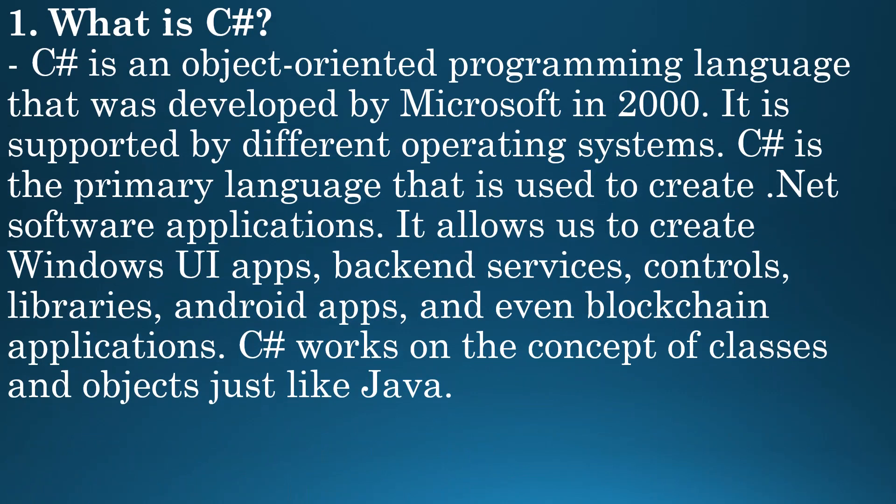What is C-Sharp? C-Sharp is an object-oriented programming language that was developed by Microsoft in 2000. It is supported by different operating systems. C-Sharp is the primary language used to create .NET software applications. It allows us to create Windows UI apps,